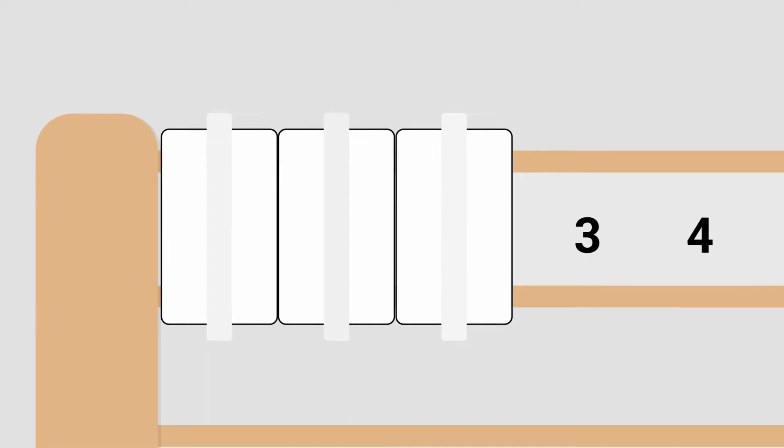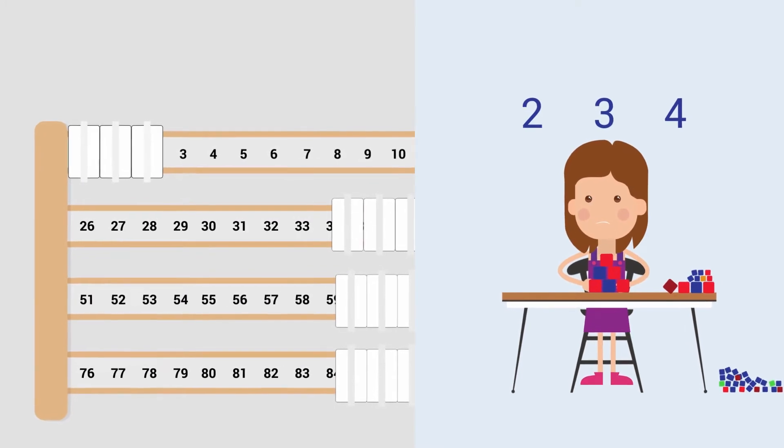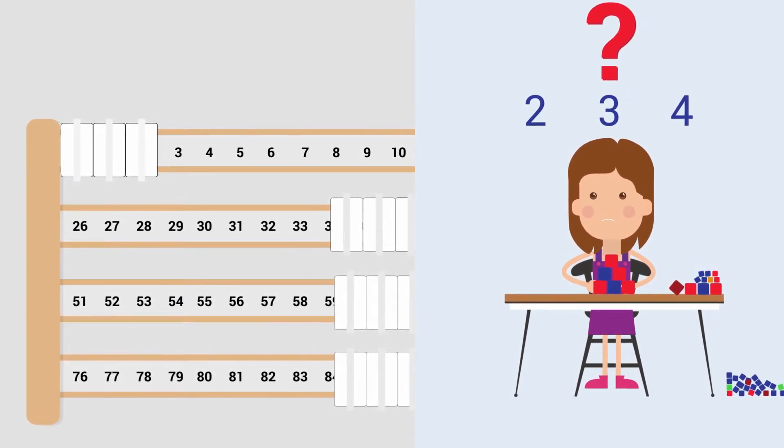Most importantly, MathLine connects objects and numbers in a mistake-free way. Other math manipulatives do not always have clear correspondence of objects and numbers.